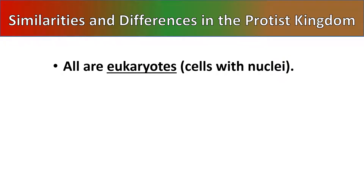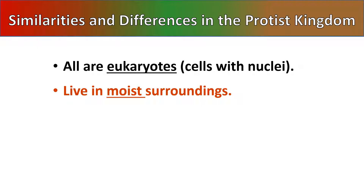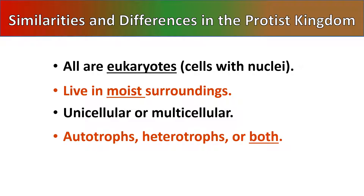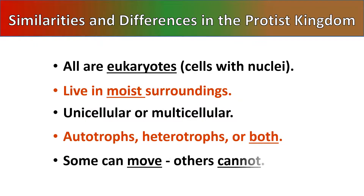Some similarities and differences amongst all the protists: they are all eukaryotes, meaning they all have cells with a nucleus - some of them more than one nucleus. They live in moist surroundings. They can be either unicellular or multicellular. Some of them are autotrophs that use photosynthesis to make their own food. Some of them are heterotrophs that have to eat something else. And there are even some that are both autotrophs and heterotrophs - in sunlight they make their own food, and when there's no sunlight they go around eating other things. And obviously some can move and others cannot.